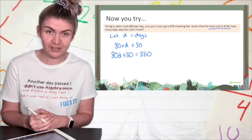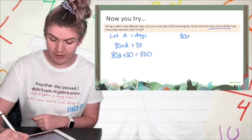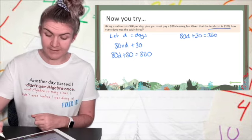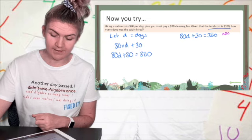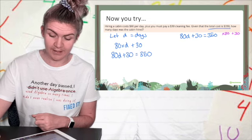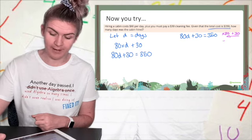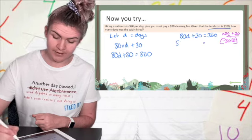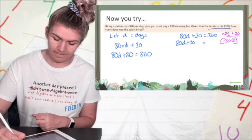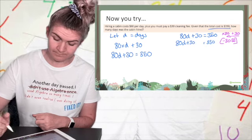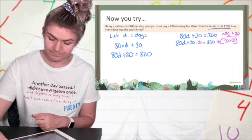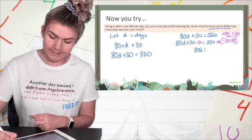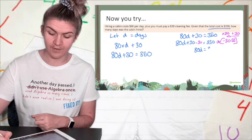Now that I have an equation, I can solve it just like normal. So what is happening to d? First, it is being times by 80, and then it is being 30 added to it. I need to go backwards. I'm taking 30 off both sides. I'm writing out my equation, and I'm taking 30 off both sides. My 30 and my 30 cancel, leaving me with 80d, and 350 take 30 is 320.